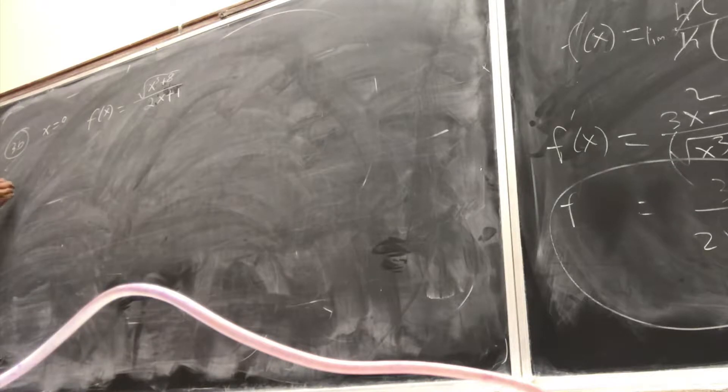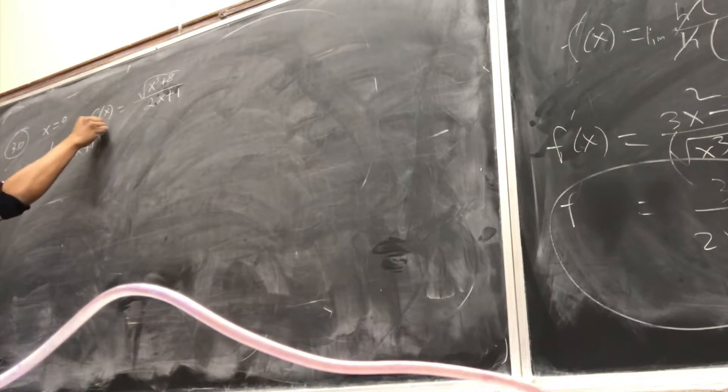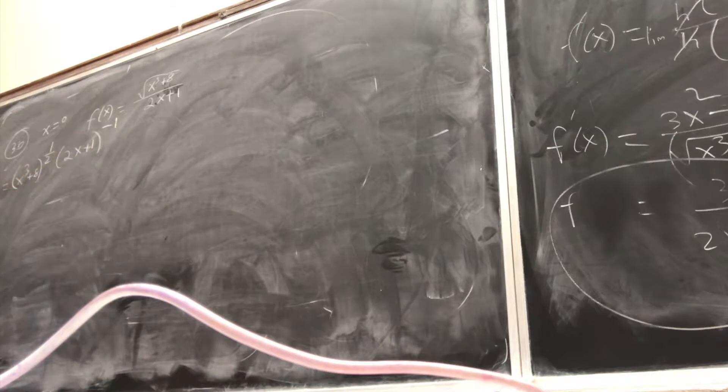So I'm going to write x cubed plus 8, 2x plus 1 to the minus 1. I want to do the product rule which is much easier.